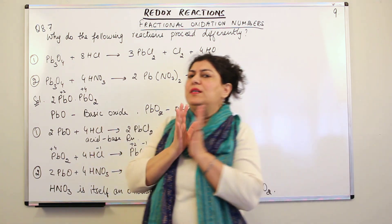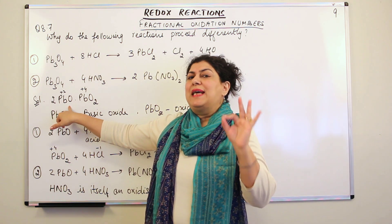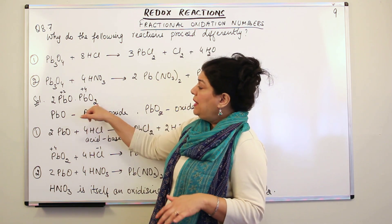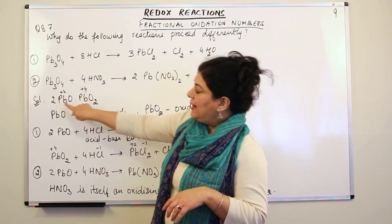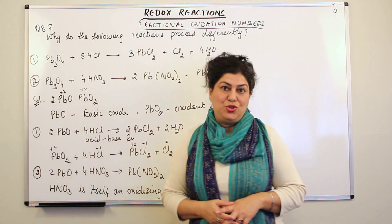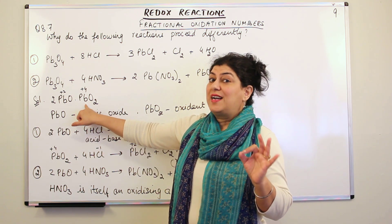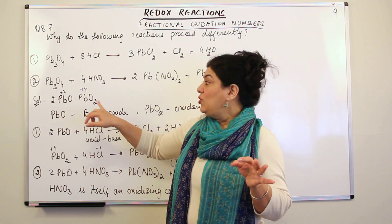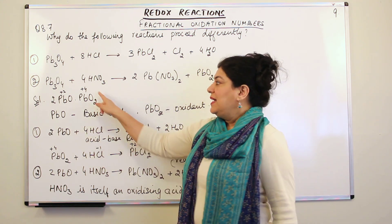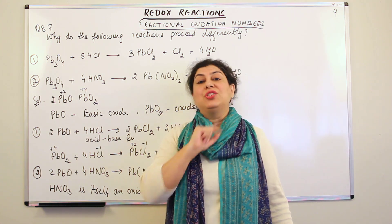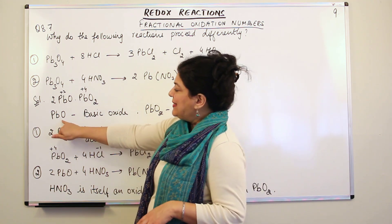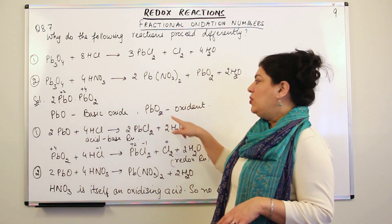What do we understand from this? PbO is a metallic oxide, and metallic oxides are basic in nature — so PbO is a basic oxide. Now PbO2 has lead in the plus 4 oxidation state. If plus 4 changes to plus 2 in the presence of an acid, it is undergoing reduction. So there is a possibility for lead in the plus 4 state to get reduced, which means PbO2 would act as an oxidising agent. So PbO is a basic oxide, and PbO2 is an oxidant.